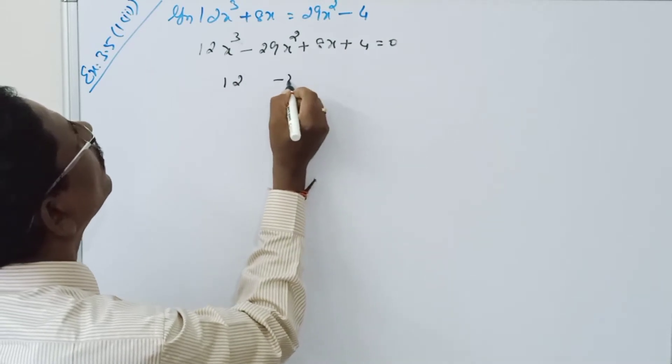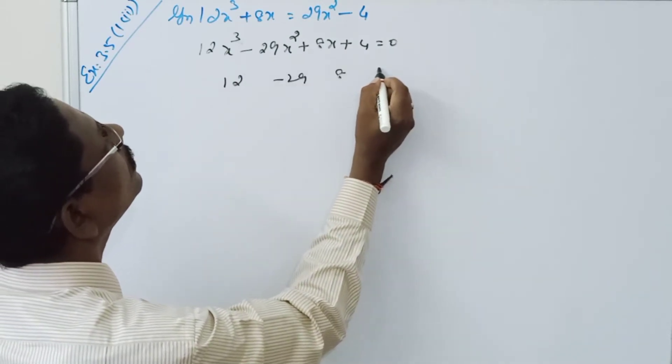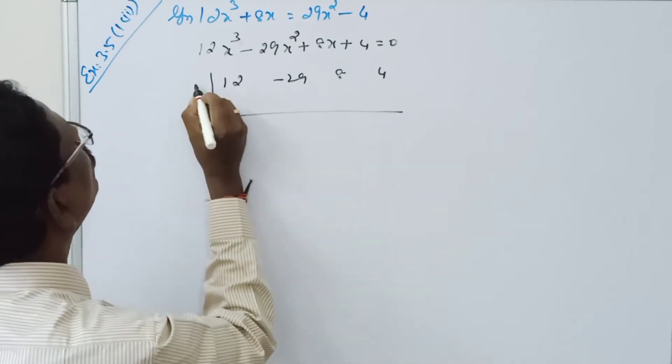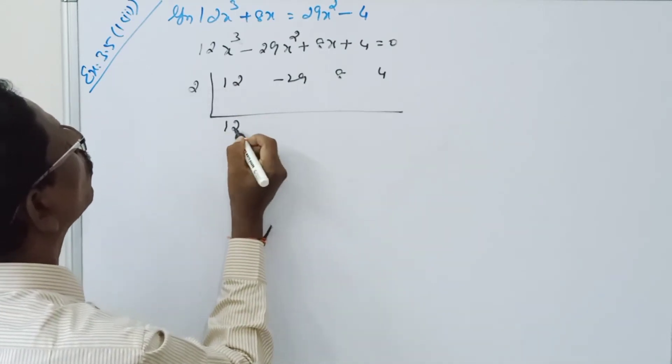12, minus 29, 8, 4. You take here 2. So 12,